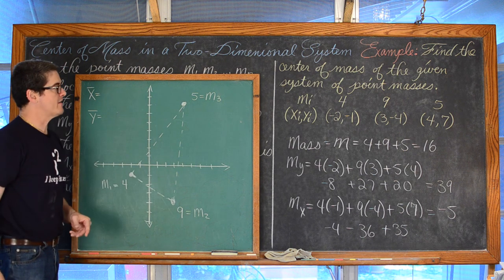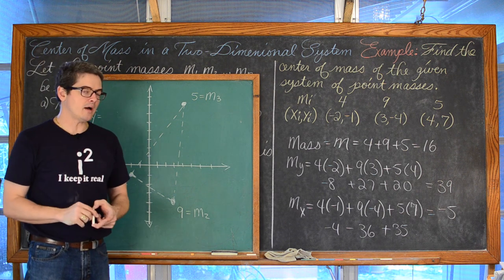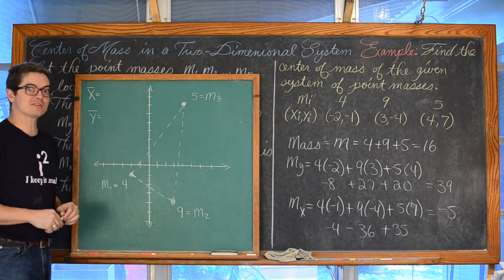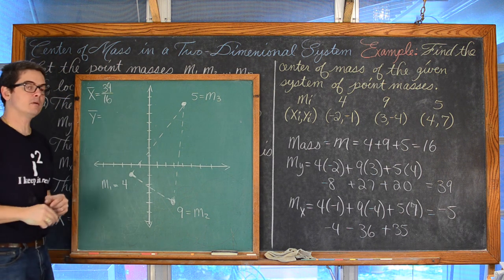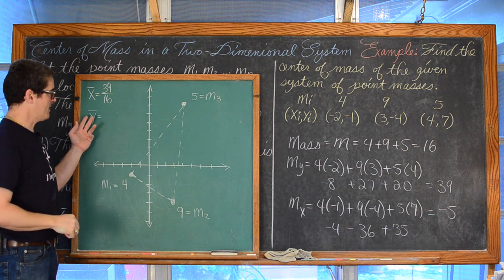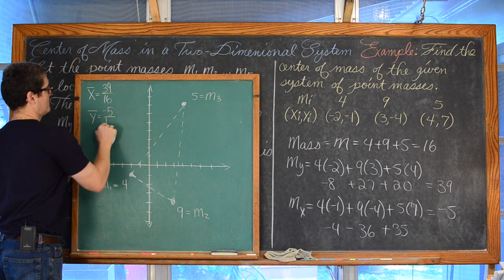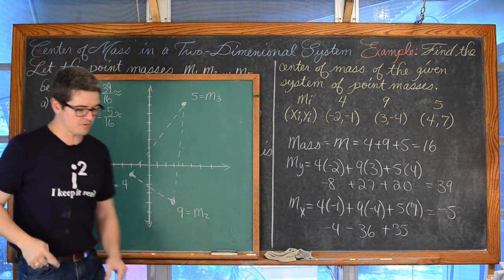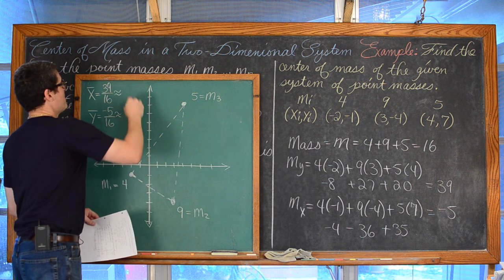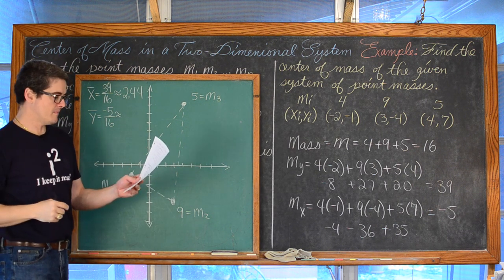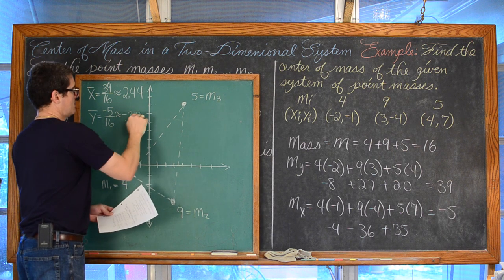We have our three point masses plotted in the appropriate spots as given in the problem. To find x-bar, all we have to do is take the moment about the y-axis and divide by the total mass — that is going to be 39 over 16. Y-bar, the y-coordinate for the center of mass, is going to be the moment about the x-axis divided by the mass — negative 5 over 16. So x-bar is approximately 2.44 and y-bar is approximately negative 0.3125.